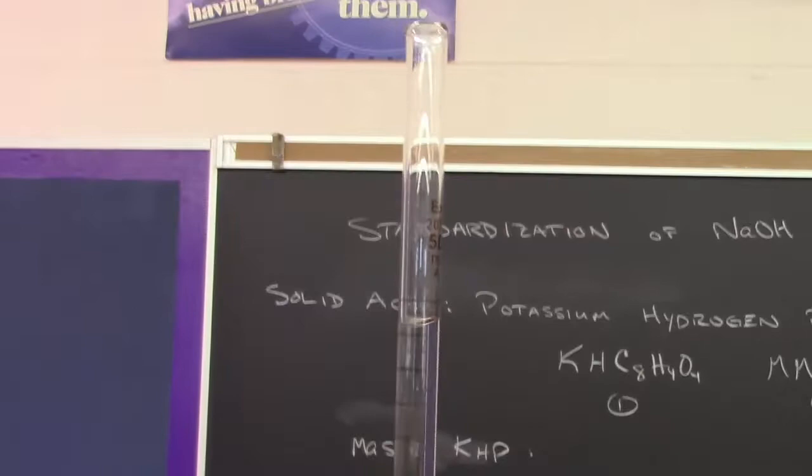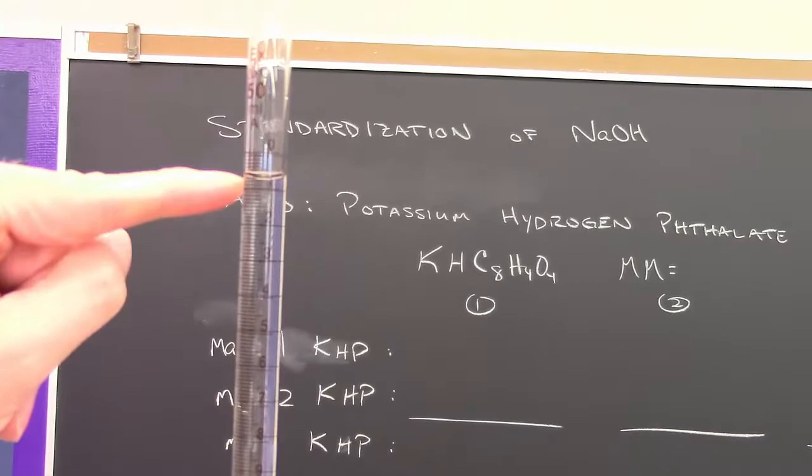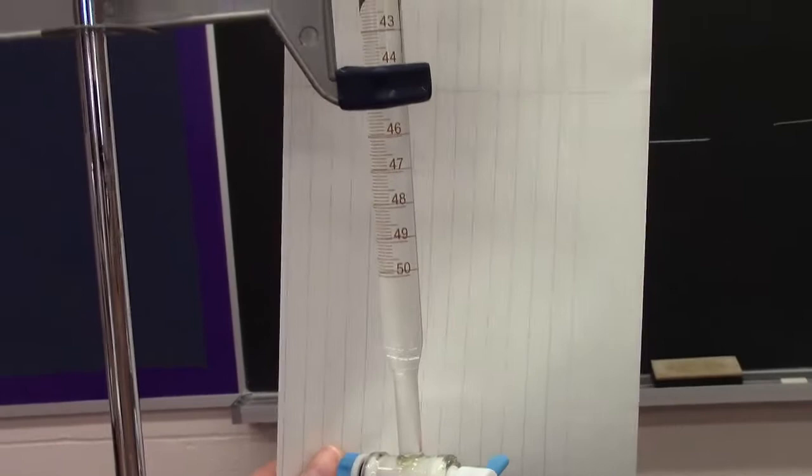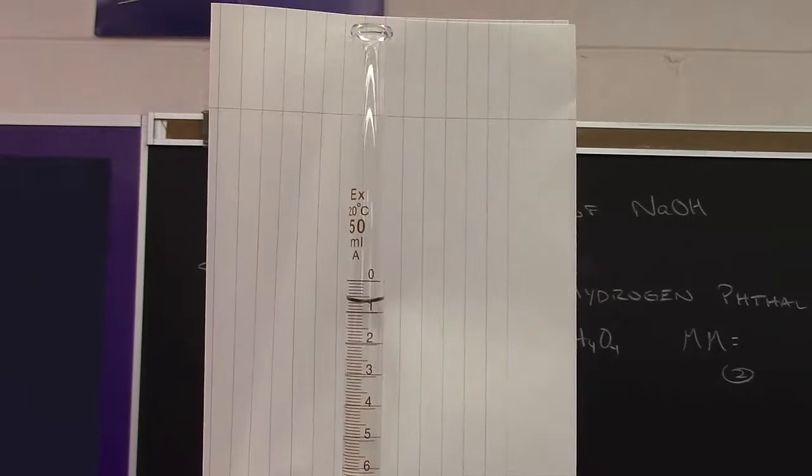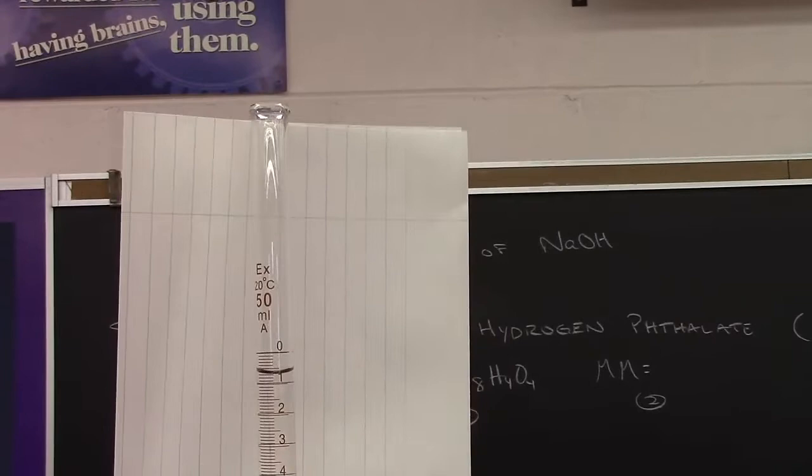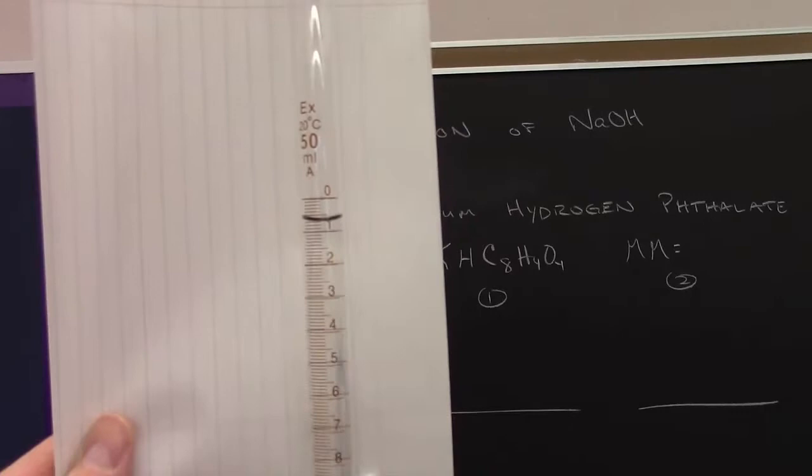One of the things that's interesting about a burette is that the zero volume marker is at the top, and at the bottom there will be a 50. The reason for that is the burette does not measure how much is in the burette, it measures how much I've put out of the burette. At the bottom is this valve assembly.